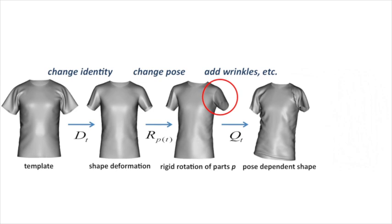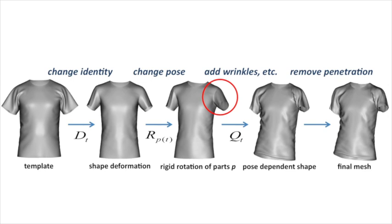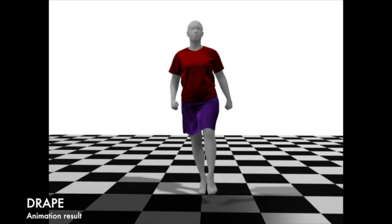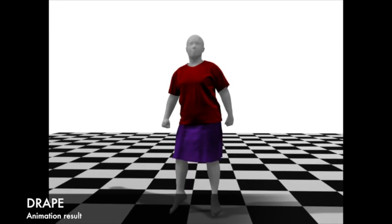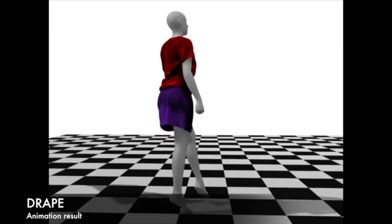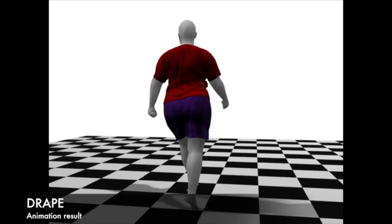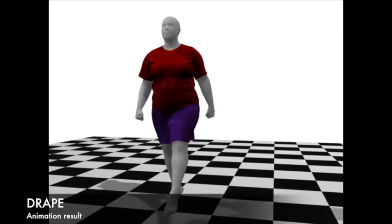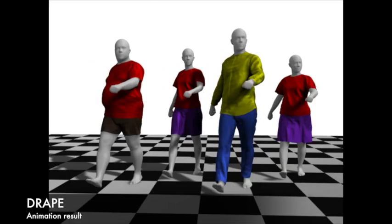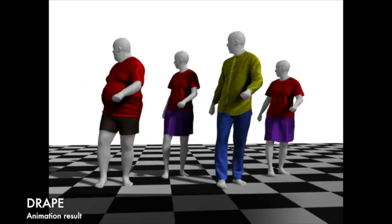After synthesizing clothing for a previously unseen body, we optimize the clothing to minimize cloth body interpenetration, while still constraining the clothing to be close to the synthesized solution. This results in synthetic clothing tailored to a particular body shape, and realistically animated as pose changes. For a previously unseen body shape, clothing synthesis is completely automatic, requiring no human intervention.